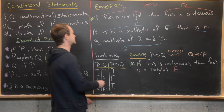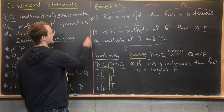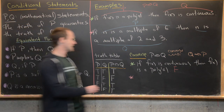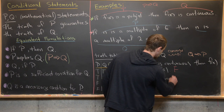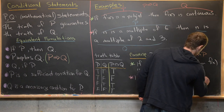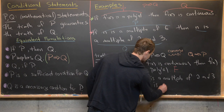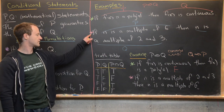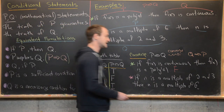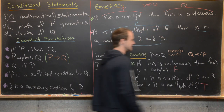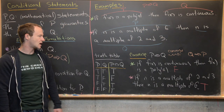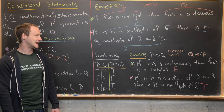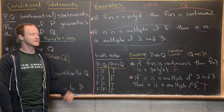Now for the second example: the converse is 'if n is a multiple of two and three, then n is a multiple of six.' In this case, the converse is still true. So sometimes the converse is true, but not always. When it is true, this is known as a biconditional statement, which we'll look at next.